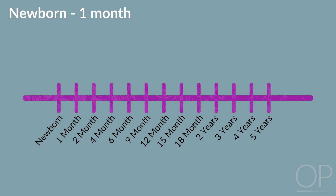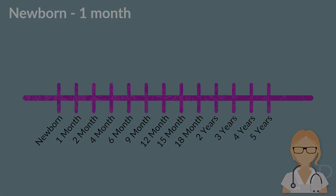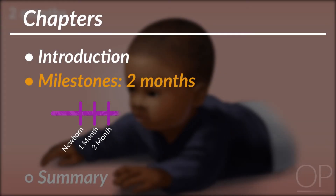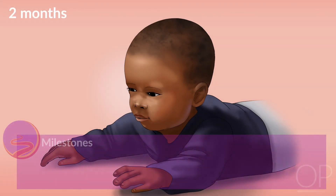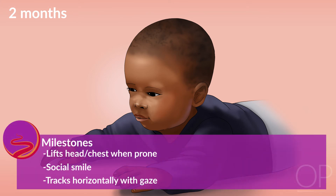Following the newborn visit, the child visits the pediatrician at two, four, and six months. Two months: At two months, she is lifting her head when prone. She now has a social smile, can track horizontally with her gaze, and can stay alert for longer periods of time.